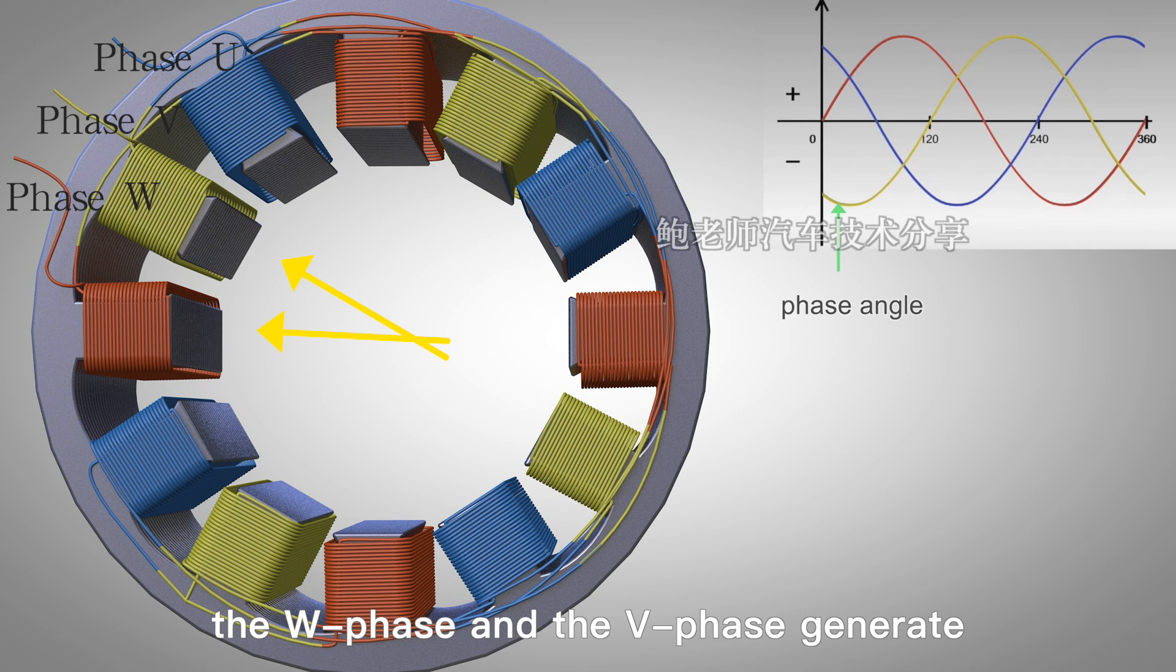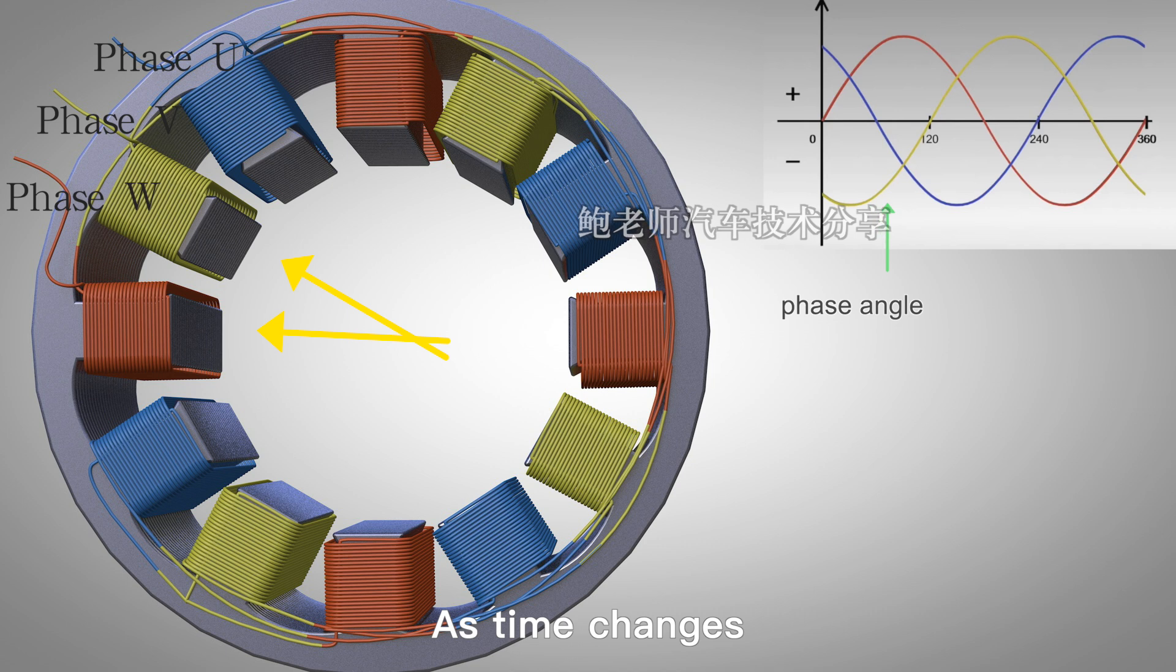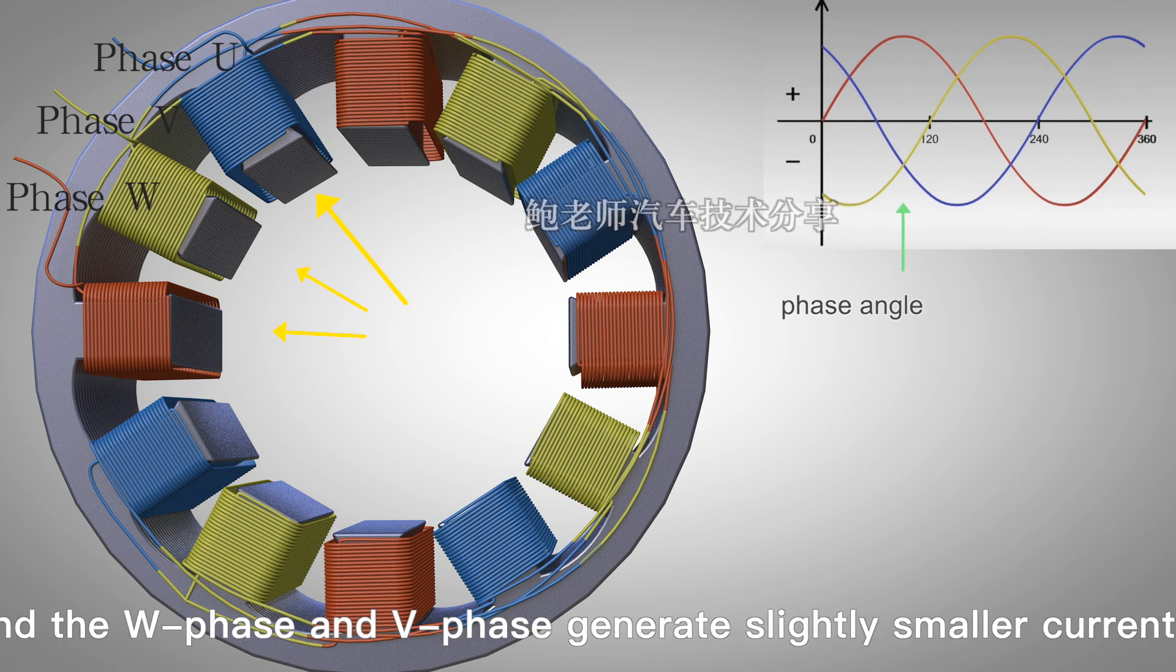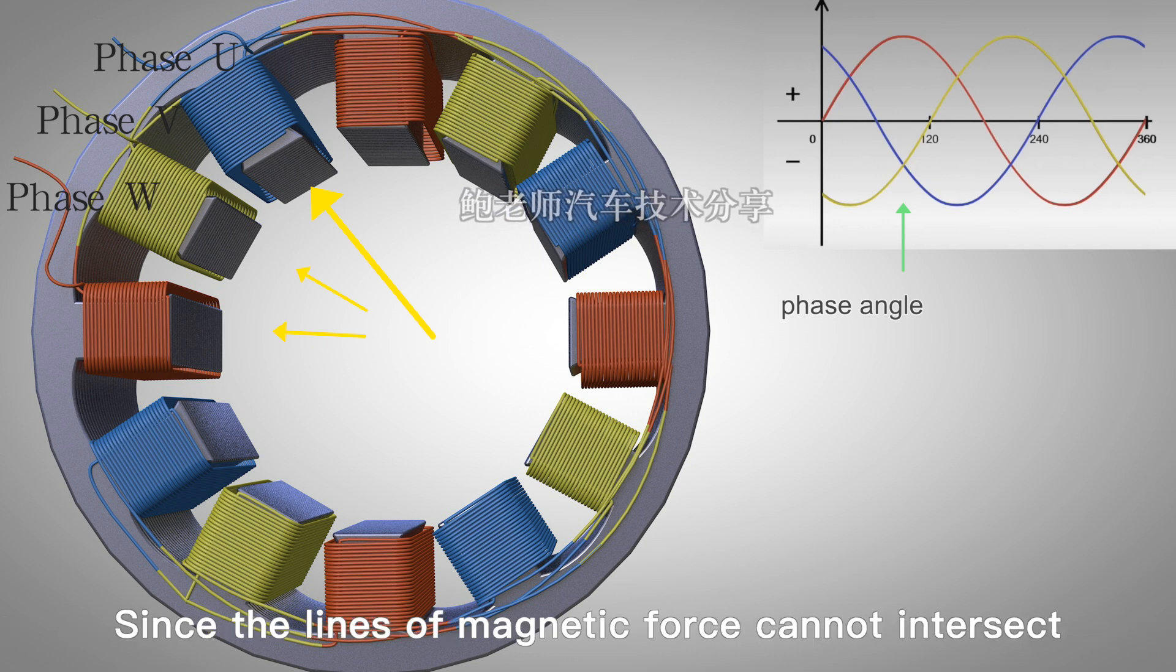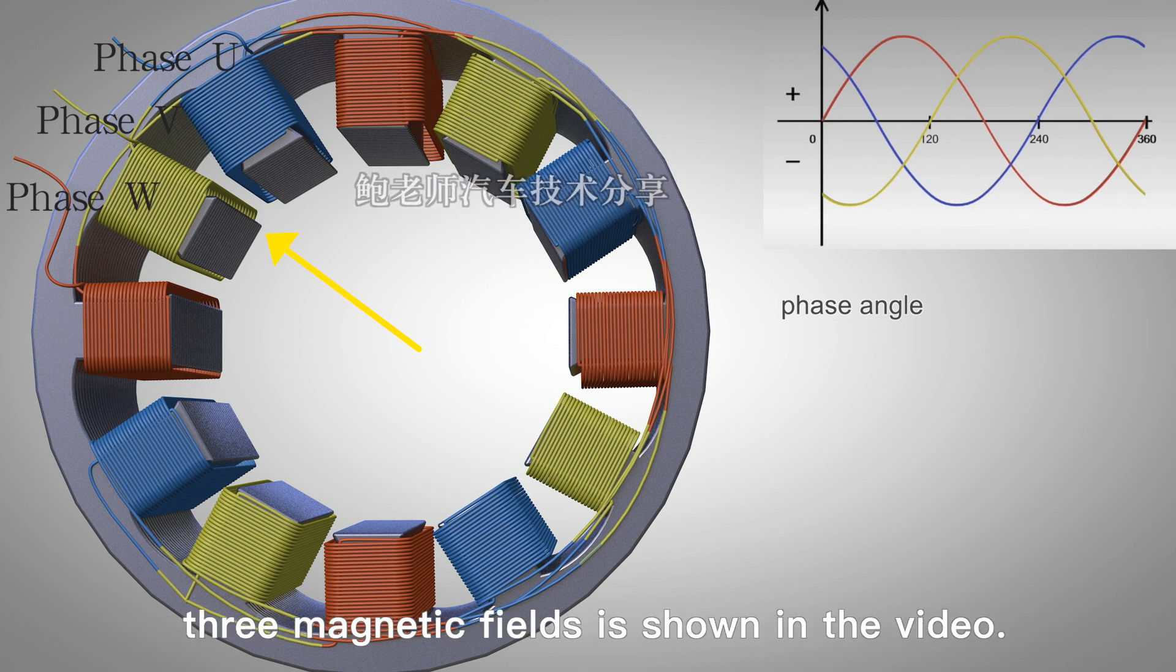at phase zero, the W phase and V phase generate magnetic fields of the same magnitude. As time changes, the U phase current reaches the maximum, and the W phase and V phase generate slightly smaller currents. Since the lines of magnetic force cannot intersect, the magnetic field after synthesis of the three magnetic fields is shown in the video.